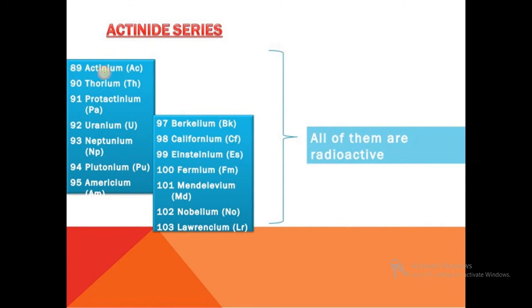In the case of actinide series, the atomic number of the first element is actinium, 89, symbol Ac. Then 90 thorium Th, 91 protactinium Pa, 92 uranium U.